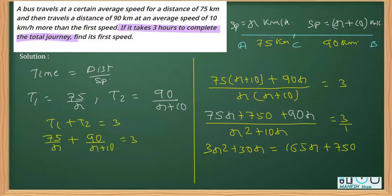Now simplifying it by writing in the standard form, this will give you 3x square plus 30x minus 165x minus 750 equals 0. This simplifies to 3x square minus 135x minus 750 equals 0. This is how we formed a quadratic equation.